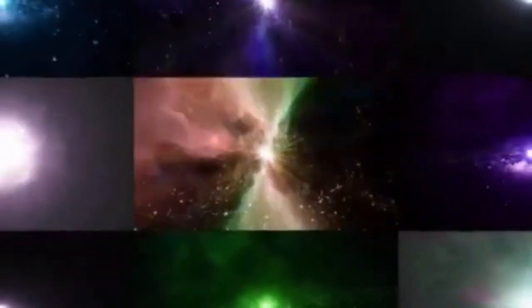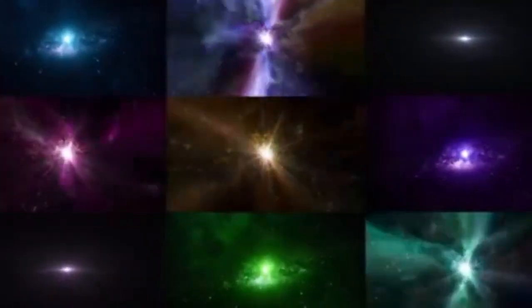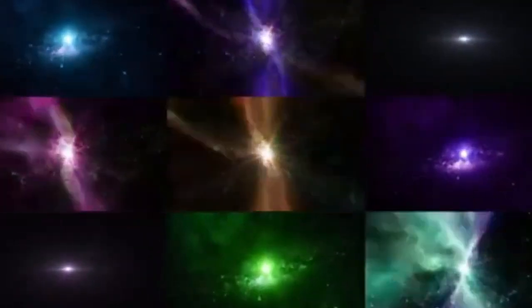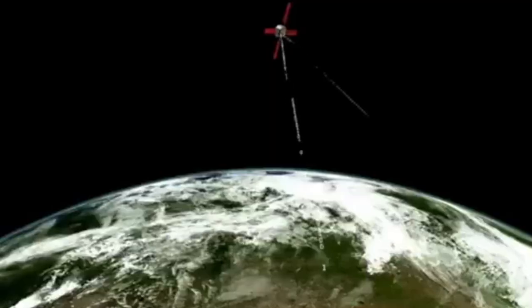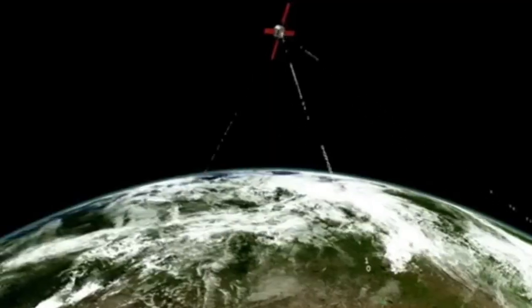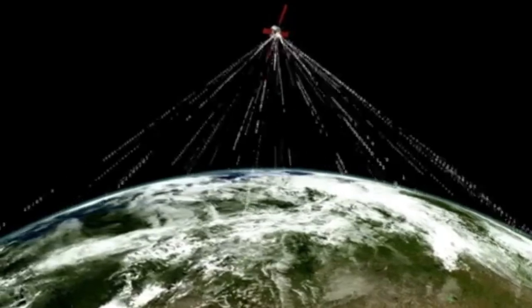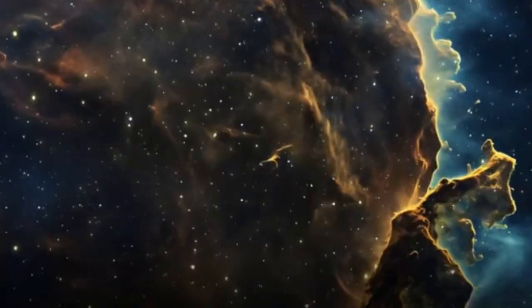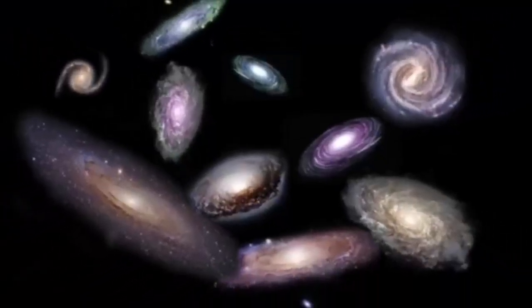This observable universe, however, only includes light that has had enough time to reach us. Any objects beyond this horizon remain invisible to us due to the limitation imposed by the speed of light. Despite the finite scope of our universe, astronomers and physicists speculate about what lies beyond its boundaries. One prevailing hypothesis is that the universe may be much larger than what we can observe. This unseen universe, potentially infinite in extent, could mirror the observable universe in its composition and distribution of matter and energy.